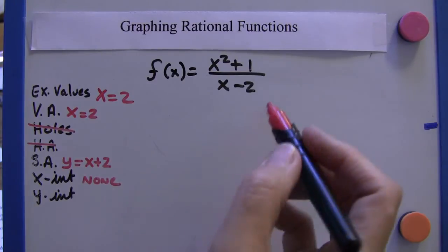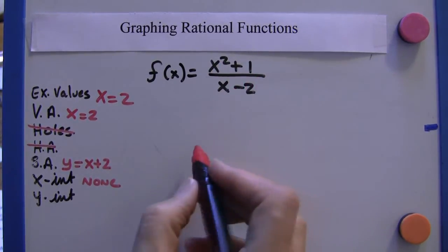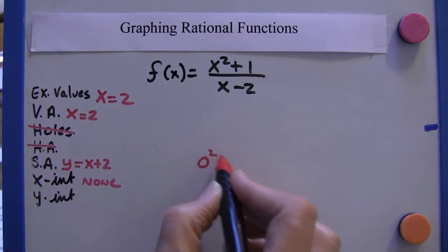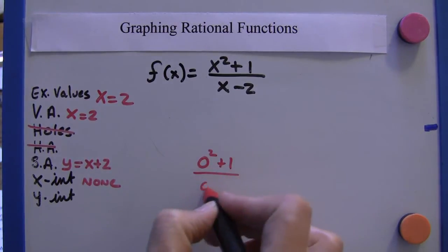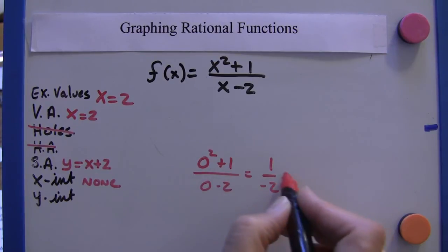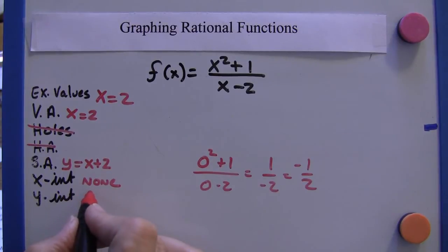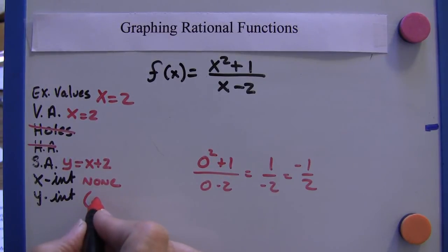And for the y-intercepts, we set x equal to zero throughout the equation here. So we get zero squared plus one over zero minus two, which is equal to one over negative two, which is equal to negative a half. So we have a y-intercept. In a y-intercept, x would be zero, and the y is negative a half.